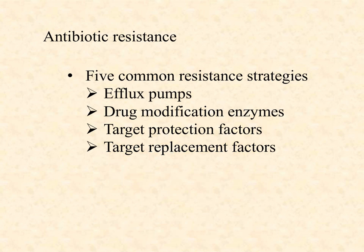In part one we talked about the difference between innate resistance, or non-susceptibility — bacteria that either don't have the target for an antibiotic or whose membrane permeability is so low that the antibiotic can't even get in — as compared to some sort of acquired resistance, where the bacteria really should be susceptible: the drug should work, the target is there, the membrane is permeable enough, but somehow the bacteria have picked up a way, a genetic trick, to protect themselves from an antibiotic.